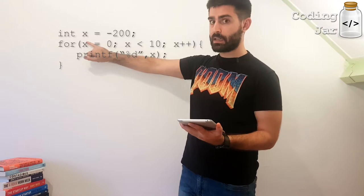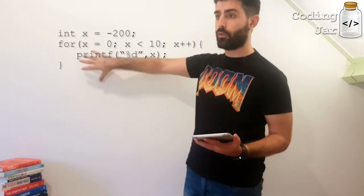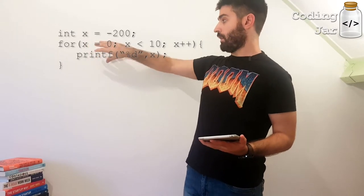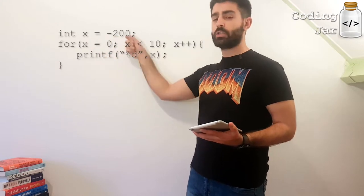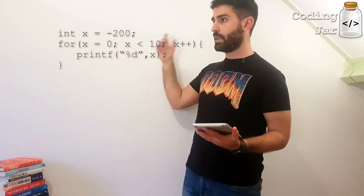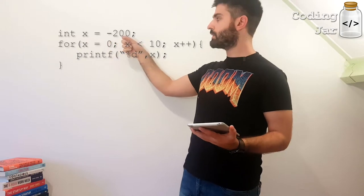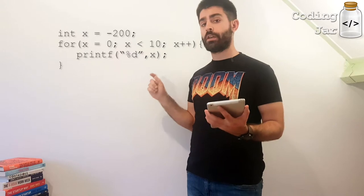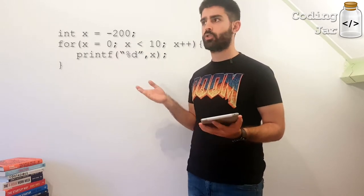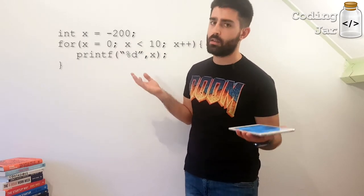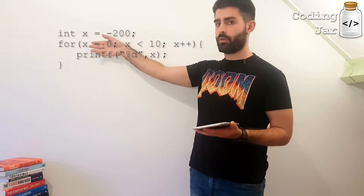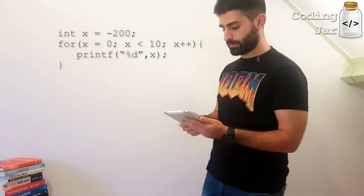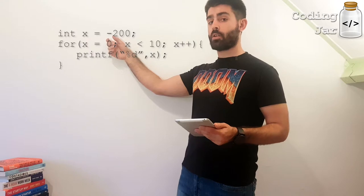That means this starting statement will be executed only when we get to the for statement the first time. Then it will check if the breaking condition is met, which means it will check if x is less than 10. If for any reason x is not less than 10, so for instance if x is 10, the program will stop executing the for block of code and it will continue executing the rest commands which are below the for statement.